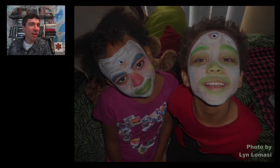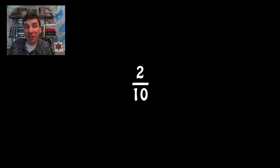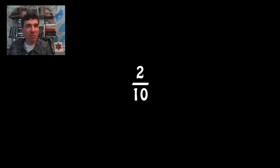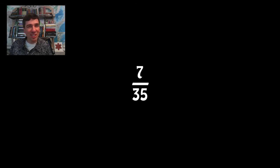They try to dress up all the time. For example, one-fifth tries to look different by putting on some clothes and looking like two-tenths, but we know it's the same. Seven-thirty-fifths — that's the same too. They're trying to confuse you, but it doesn't work.